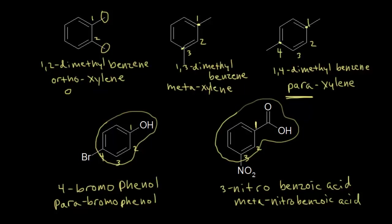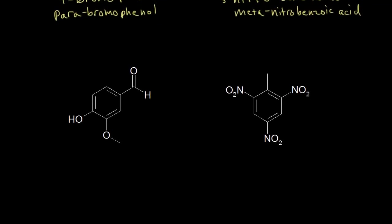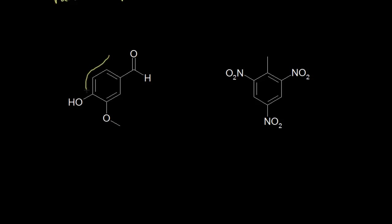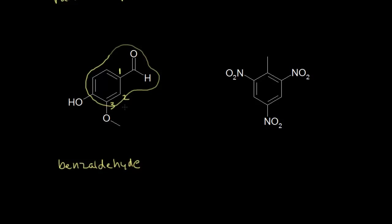Let's look at polysubstituted benzene derivatives with two famous examples. We first find a monosubstituted parent name — in this case, benzaldehyde. Aldehydes have precedence over alcohols, so we name this as a benzaldehyde derivative, making the aldehyde carbon 1. We number to give the lowest possible numbers to substituents. There is an ether group at carbon 3, which as a substituent is called a methoxy group, so we write 3-methoxy.